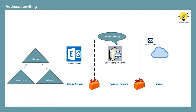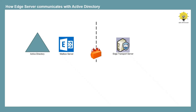Edge Transport Server has two transport agents that provide the rewriting functionality: address rewriting inbound agent and address rewriting outbound agent. Edge Transport Server doesn't have access to Active Directory information because it is always installed in a perimeter network and is never joined to the Active Directory domain. Edge Transport Server requires only some of the information from Active Directory.